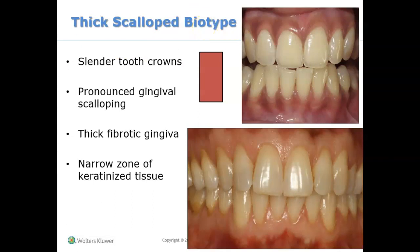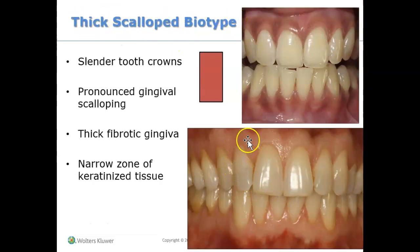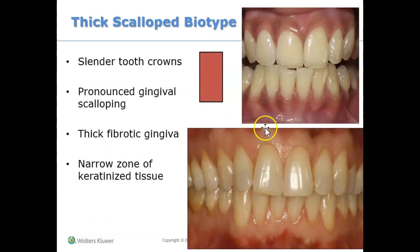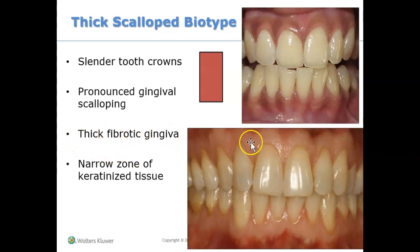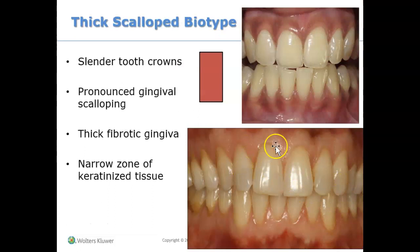Here's another example — the thick scalloped biotype. The thick flat biotype has a flatter papilla, but here we see the scalloping in the margin. The thick scalloped biotype shows a noticeable knife-edge scalloping and occurs with people who have slender or long tooth crowns. Their gums are thick and fibrotic. The downside is they have a narrow zone of keratinized tissue, compared to the thick flat biotype which has a broad zone of keratinized tissue.